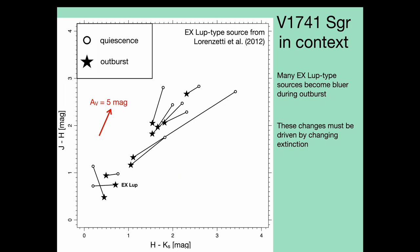Color changes during outbursts are fairly common. Here is a collection of EX Lupi outbursts from Lorenzetti et al. During many of these outbursts, the near-infrared J-H and H-K colors become significantly bluer. These color changes are too extreme to come from temperature changes, so they must indicate decreases in source extinction during these outbursts. Intriguingly, the prototypical star EX Lupi is at the bottom left of this diagram and doesn't show any dramatic changes. V1741 Sagittarius also lives in a similar part of this color-color diagram. During the outburst, it got slightly bluer in J-H but also slightly redder in H-K. A possible explanation is that it started out without high extinction, so a significant decrease in extinction was not possible.